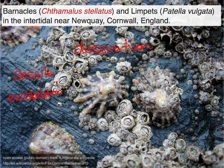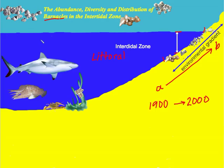Limpets feed on the larvae of the barnacles. Other predators of barnacles include whelks, which are sea snails, and starfish. Let's return now to our original task.